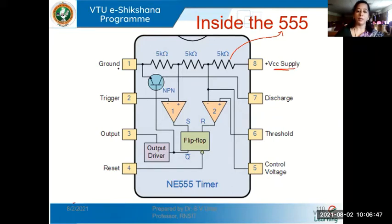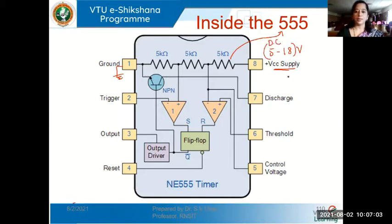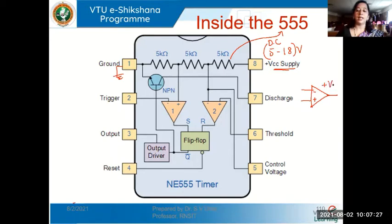The power supply for the 555 timer can be anywhere between 5 to 18 volts DC. Coming to the two other important components: the two comparators. A comparator compares the voltages at its two input terminals and generates an output at either positive or negative saturation — it is an op-amp in open-loop mode without any feedback, acting like a comparator.